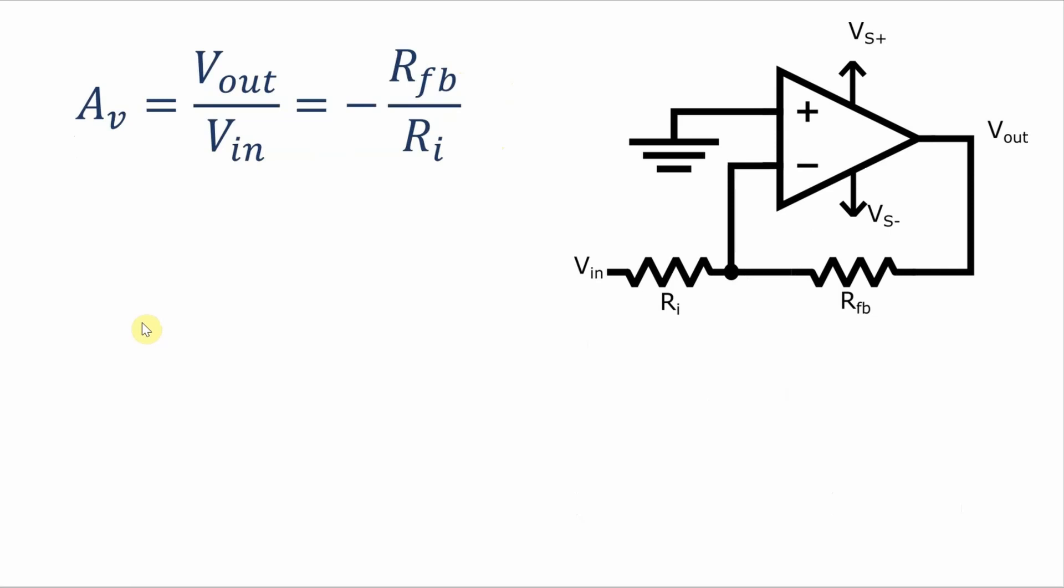First we're going to do a simple derivation and for this derivation the two main assumptions that we need to make for this op-amp are that the input resistance or the input impedance of the op-amp is infinite so no current flows into the inverting or non-inverting terminal.